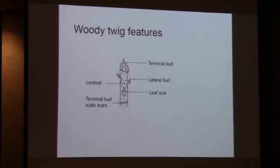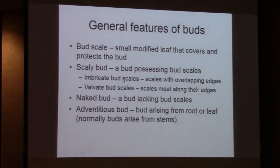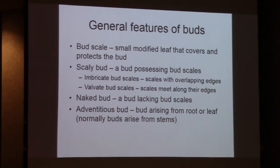Here on a woody twig - clearly a deciduous plant like a hickory - you can see a node represented by that leaf scar, and the axillary bud above it. And you see those raised streaks - those are lenticels. Buds may be protected by bud scales - small modified leaves - or they may be naked. Buds with bud scales are called scaly buds. In a dendrology course, especially when dealing with winter twigs, these features are important. Naked buds lack those protective bud scales.